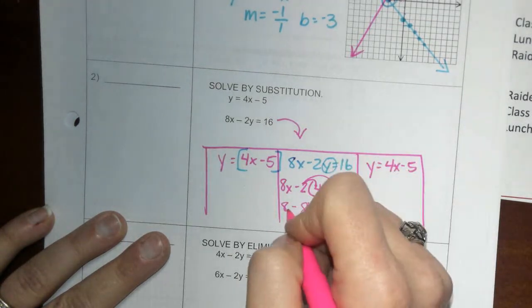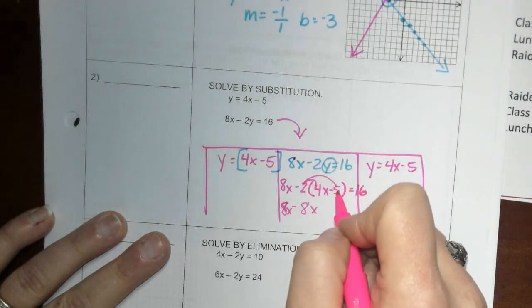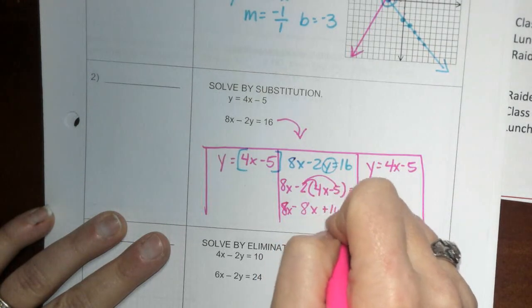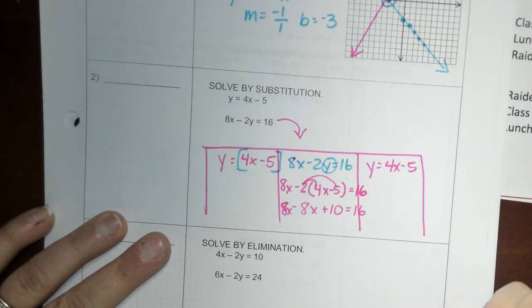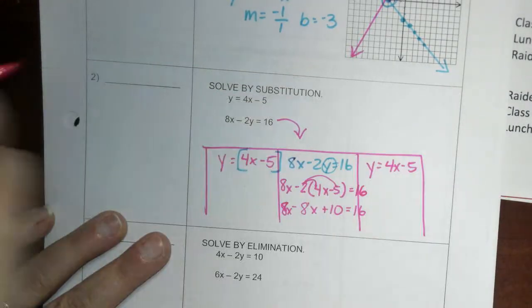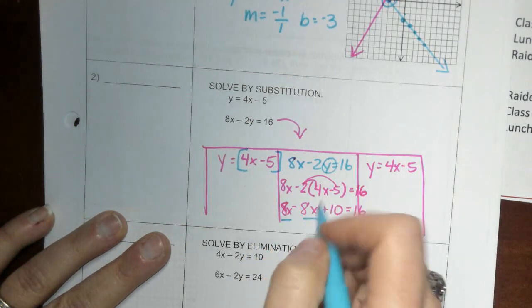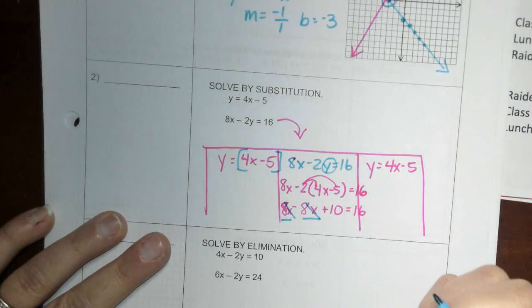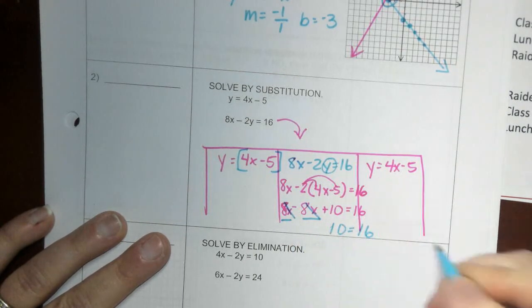Negative 2 times negative 5 is a positive 10 equals 16. All right, so now I have some like terms I need to combine. 8x minus 8x is 0, just cancel out, and you're left with 10 equals 16.